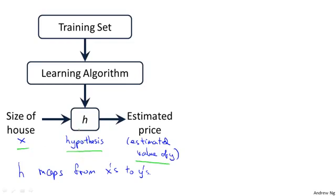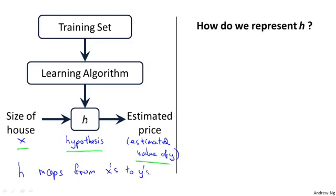When designing a learning algorithm, the next thing we need to decide is, how do we represent this hypothesis h? For this and the next few videos, our initial choice for representing the hypothesis will be the following. We'll write this h subscript theta of x equals theta 0 plus theta 1 of x. And as a shorthand, sometimes instead of writing h subscript theta of x, I'll just write this as h of x. But more often, I'll write it as a subscript theta over there.